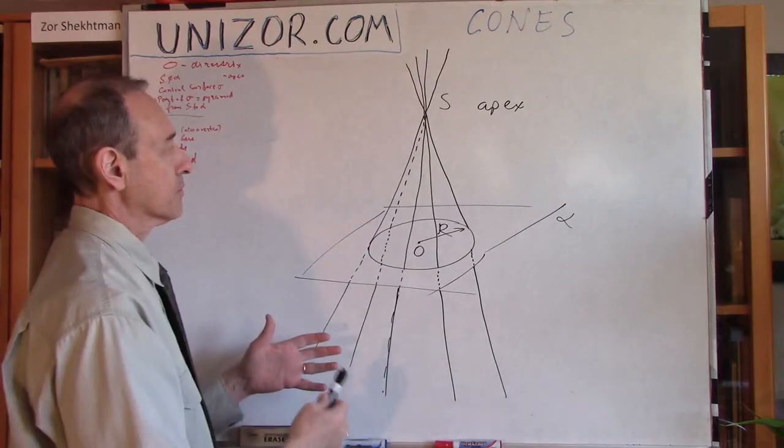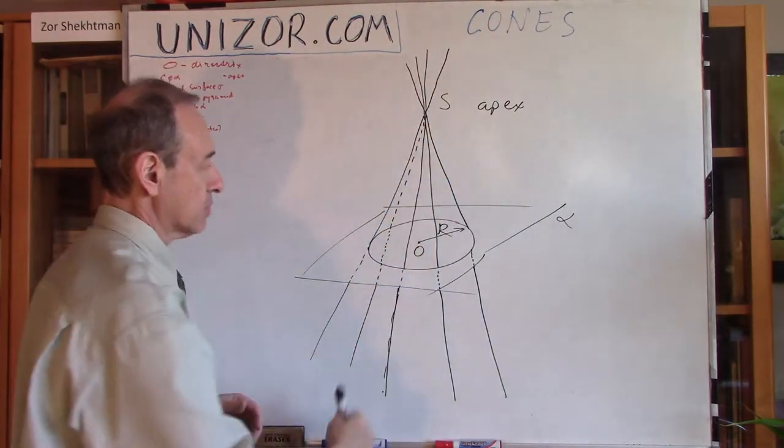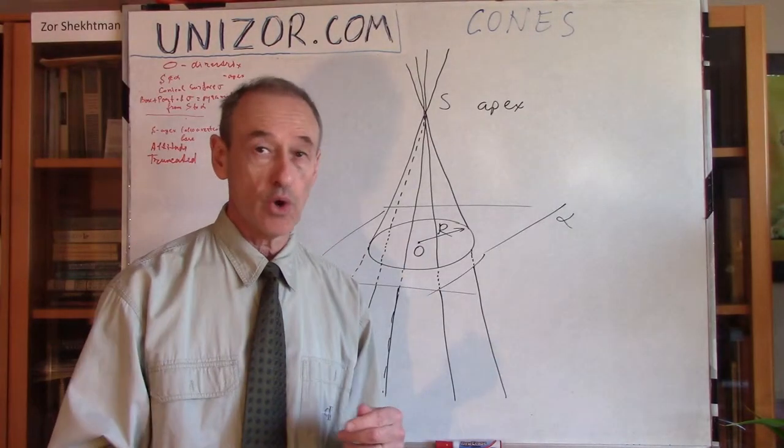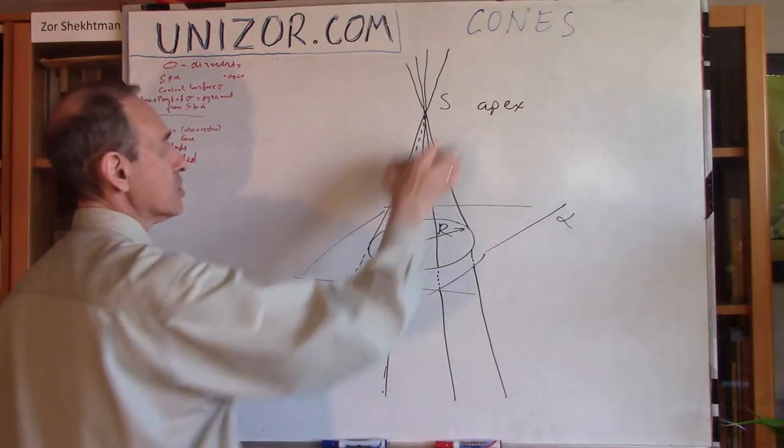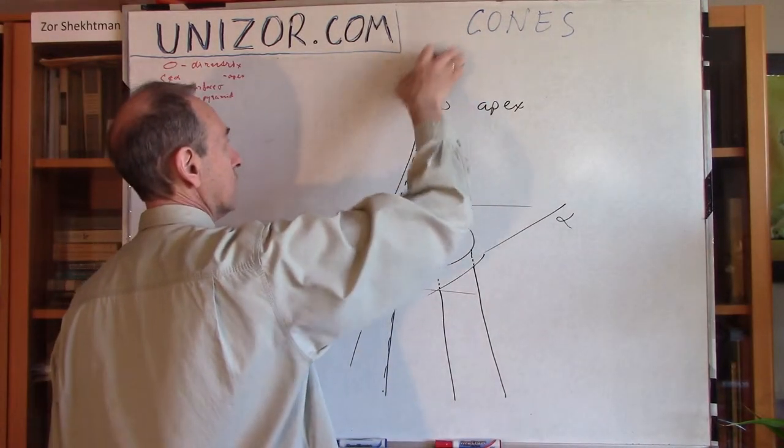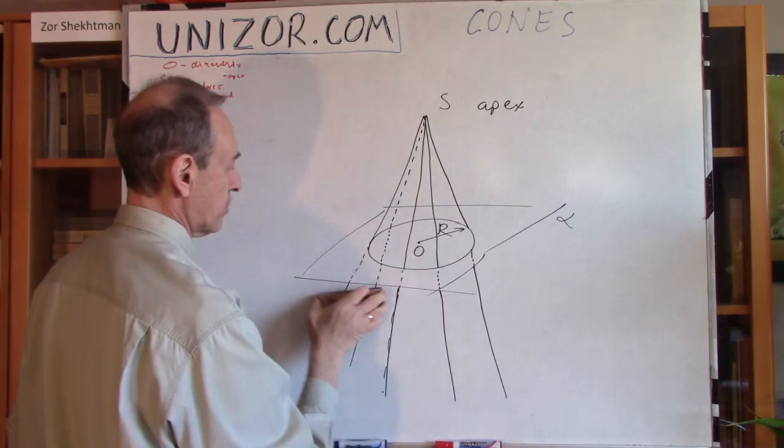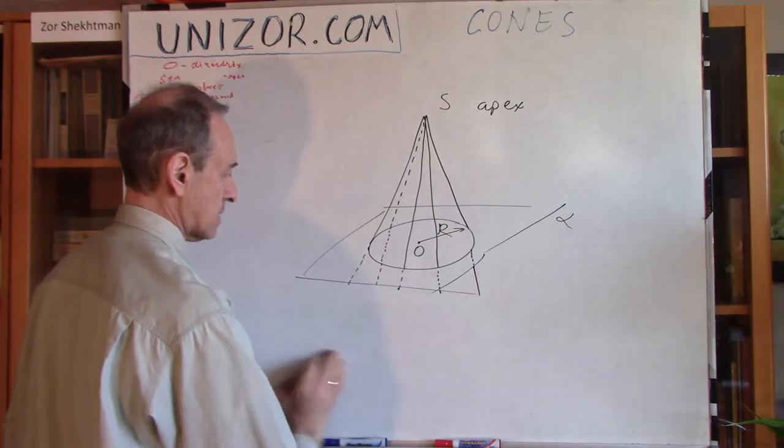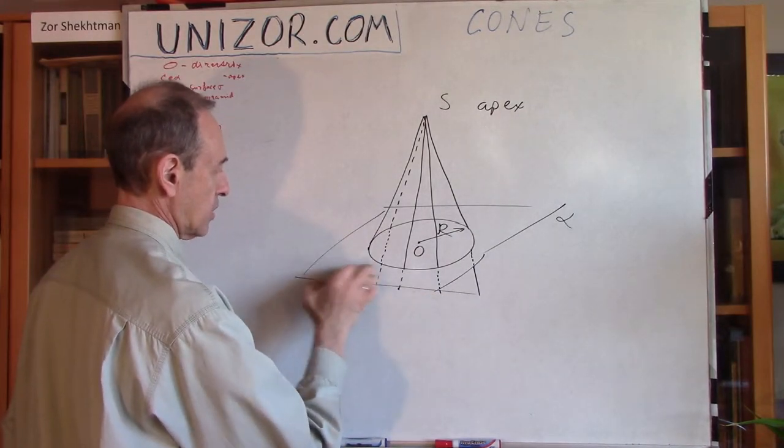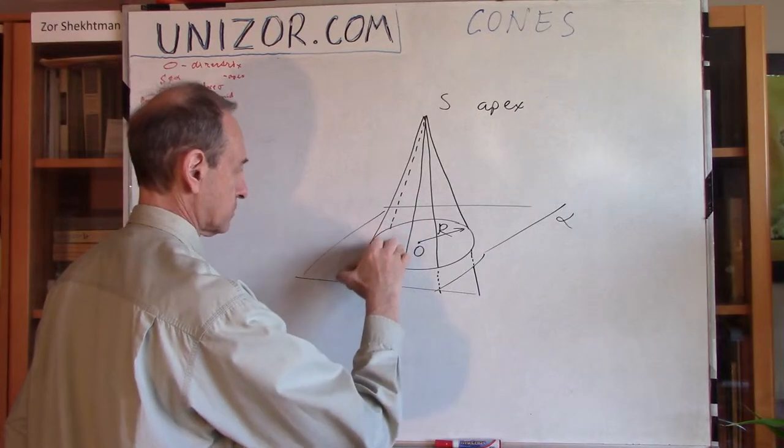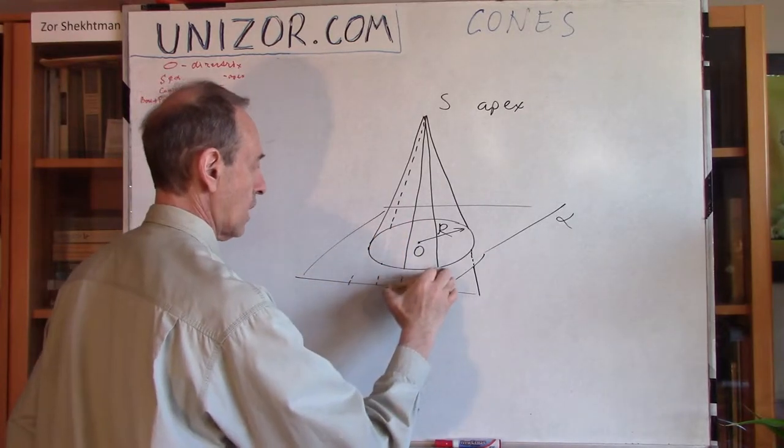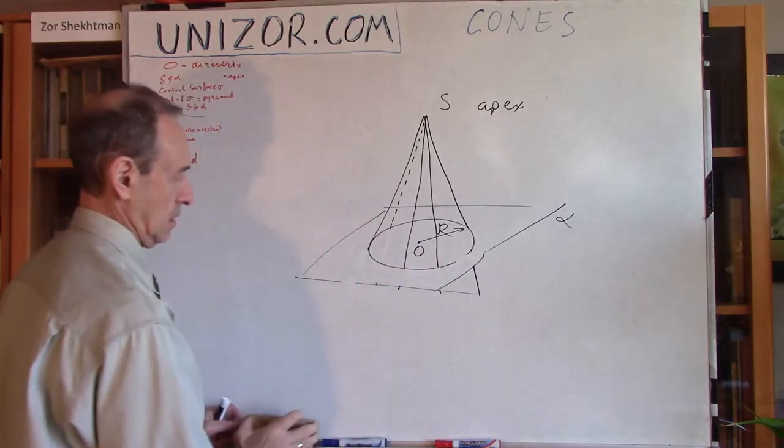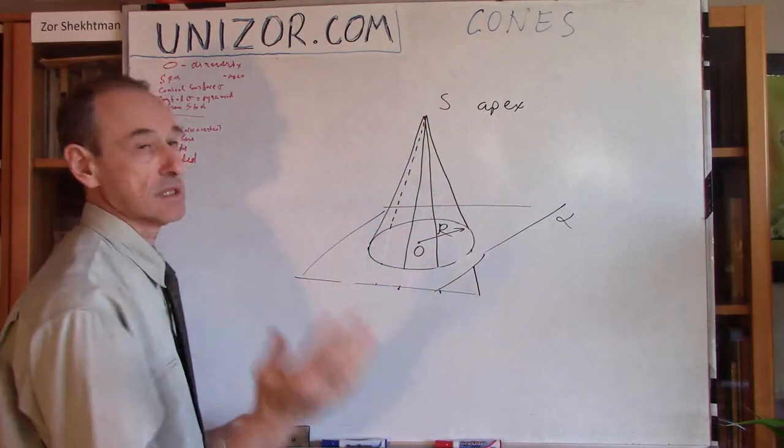Now, obviously the conical surface has two sides above the apex and below the apex. And when we are constructing the cone, we are not interested in anything which is above the apex or below the plane which is actually a base. So, we are not interested in anything which is below. So, only this part of the conical surface which is in between the plane and the apex is considered.